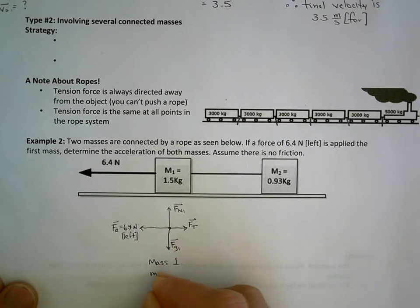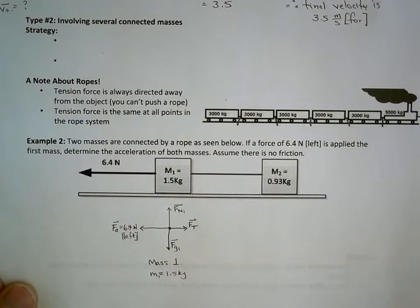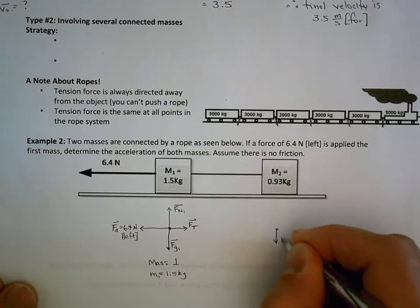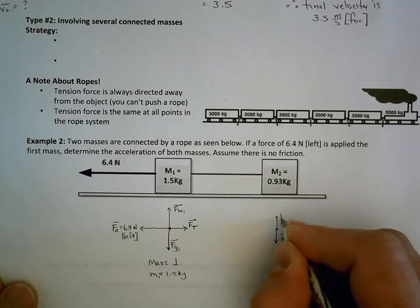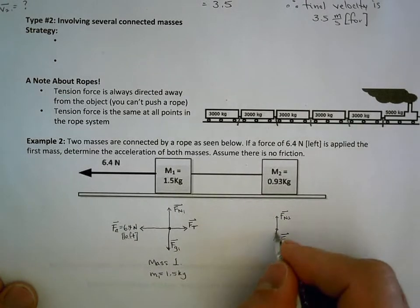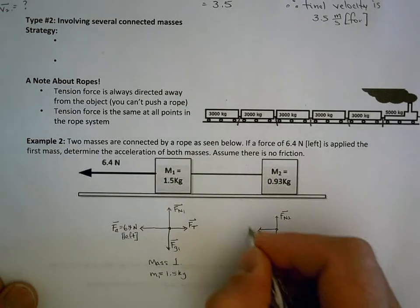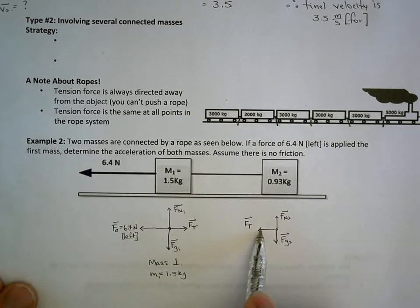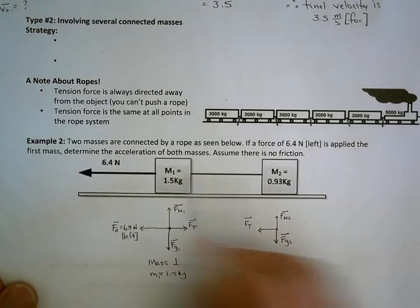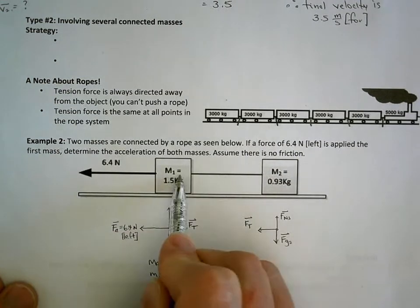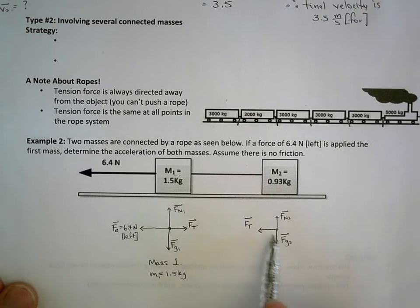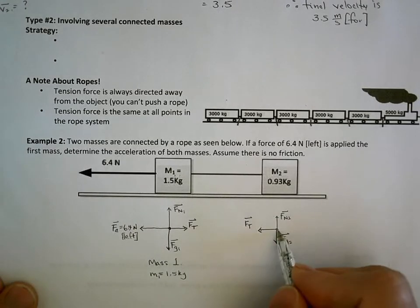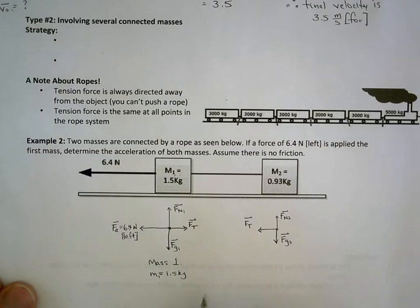For mass 2, the force of gravity is a little less, and the normal force as well. The tension force — as we'll see in the slides — is the same throughout the entire rope. So whatever it is for mass 1, it's the same for mass 2. From mass 2's point of view, the rope is actually pulling it to the left, because the rope is connected to mass 1 which is being pulled. Ropes always pull — you can't push a rope. There's no friction, so there's no other force to draw for mass 2.